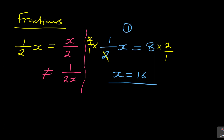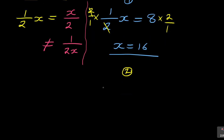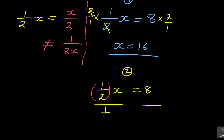Method number two: given 1/(2x) = 8, some prefer to divide both sides by what they don't want. So you divide both sides by 1/2. Dividing by 1/2 on the left and on the right, you get x = 8 divided by 1/2.